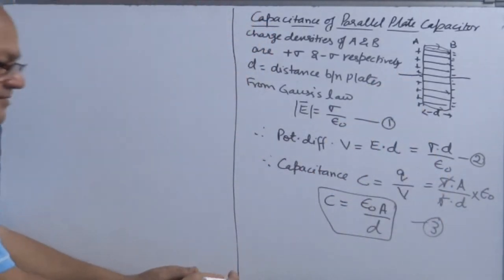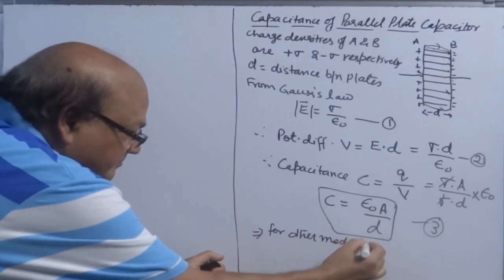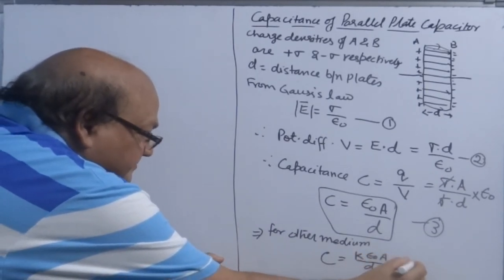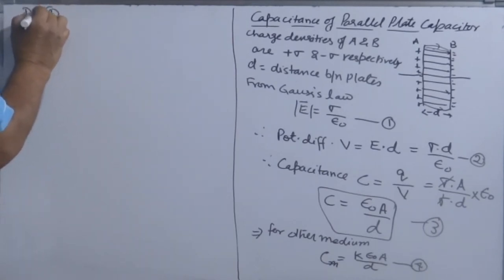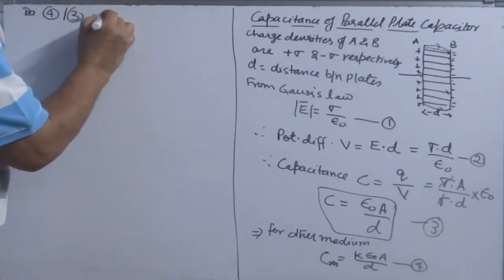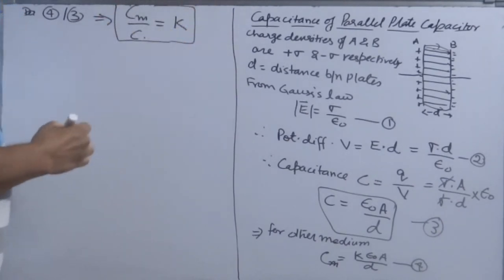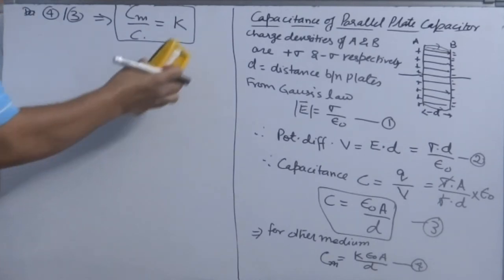If you replace air with some other medium, then C equals K epsilon-naught A over d, where K is the dielectric constant. Dividing capacitance in medium by capacitance in air gives C_M over C equals K, the dielectric constant. So we have now defined dielectric constant in terms of the ratio of force, ratio of electric field, ratio of potential difference, and now also in terms of the ratio of capacitance.